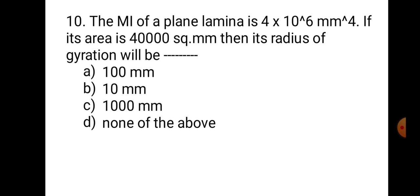Question number 10. The MI of a plane lamina is 4×10⁶ mm⁴. If its area is 40,000 mm², then its radius of gyration will be: A. 100 mm, B. 10 mm, C. 100 mm, and D. None of the above. The formula for radius of gyration is equal to the square root of I divided by A. Substituting the given values of I and A, the radius of gyration works out to 10 mm. Hence, the correct answer is B. 10 mm.